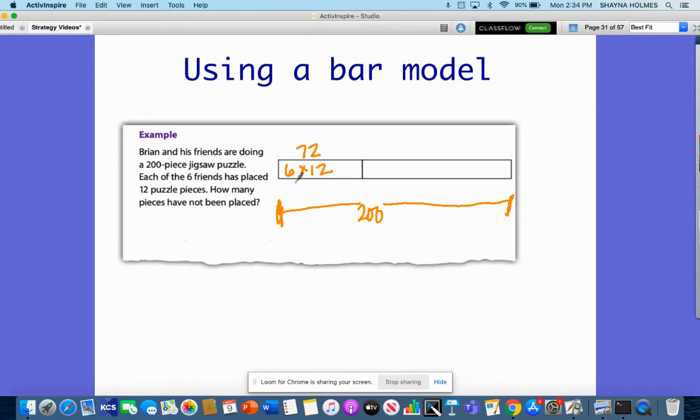So this first part right here is 6 times 12, which I've got 72 here. So 72 is how many pieces have been placed. I also need to find out how many have not been placed. So if I did 6 times 12, this is going to be p for placed. P equals placed pieces, and p equals 72.